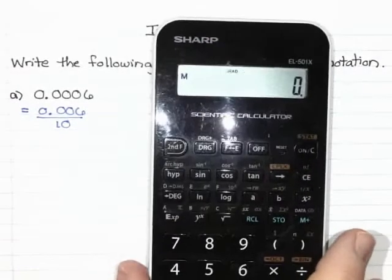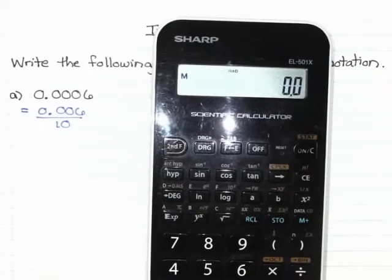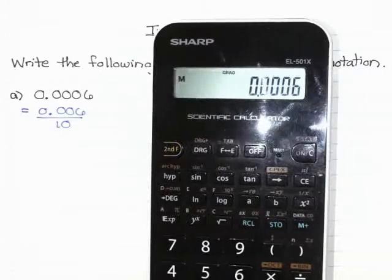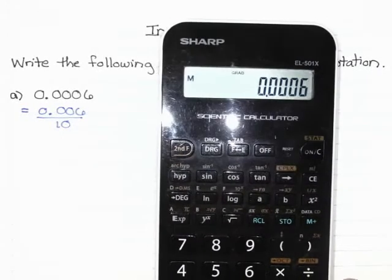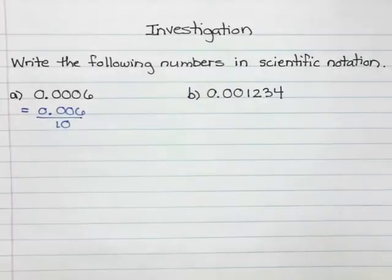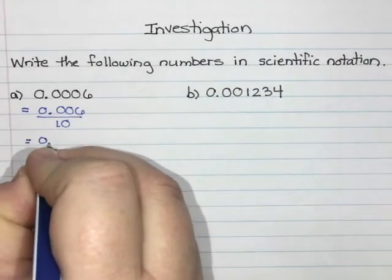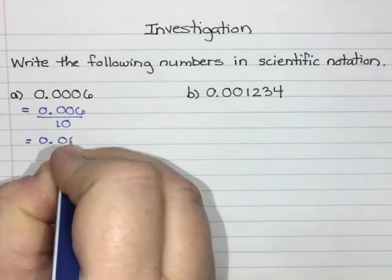I'm going to check on my calculator that's right - so 0.006 divided by 10 does give me 0.0006, so I'm getting the number that I want. I could go a little further and say this is the same as 0.06 divided by 100.